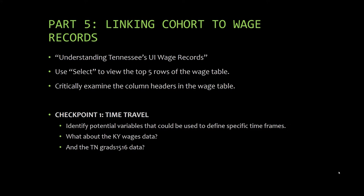Part 5 of the notebook gets us into the meat and potatoes. Here, we'll be establishing a link between our cohort data and the UI wage records. In the very first code cell of Part 5, we select for the first five rows from the Tennessee UI wage table. It's important to look through the column headers in the wage table. Once you've carefully reviewed the column headers, you're ready to tackle Checkpoint 1, time travel. In the two code cells that appear immediately below Checkpoint 1, you can also compare column names from the Kentucky Wages table and from the Tennessee 2015–2016 grads table.